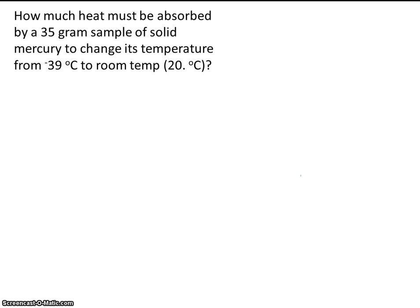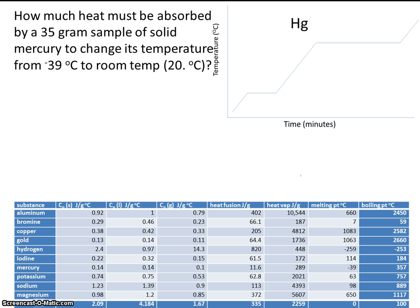So draw your heating and cooling curve. We'll label it mercury. We're dealing with mercury, so let's look up mercury on the chart. Mercury has a melting point of -39, so let's add that, and a boiling point of 357.